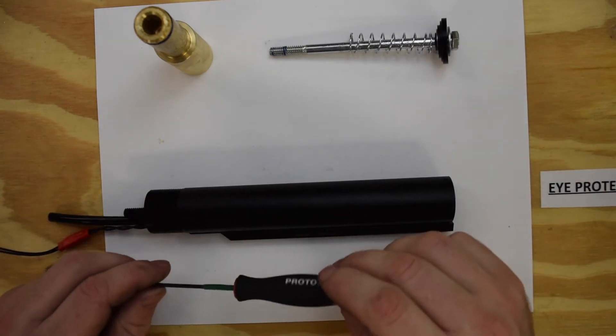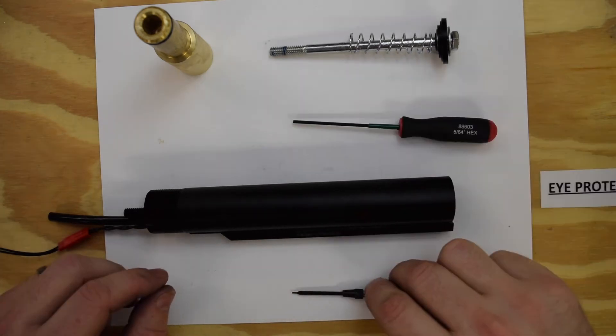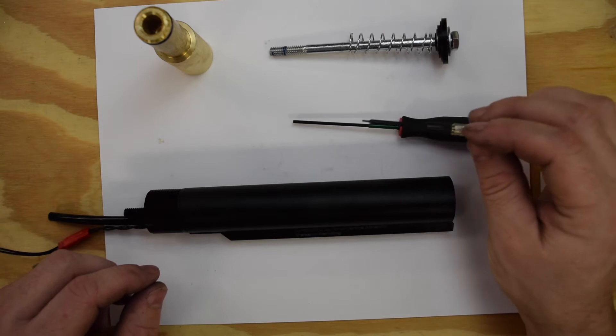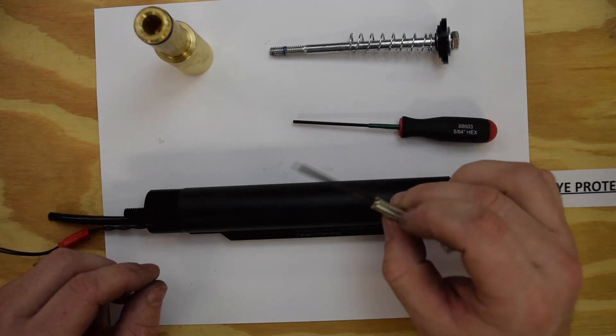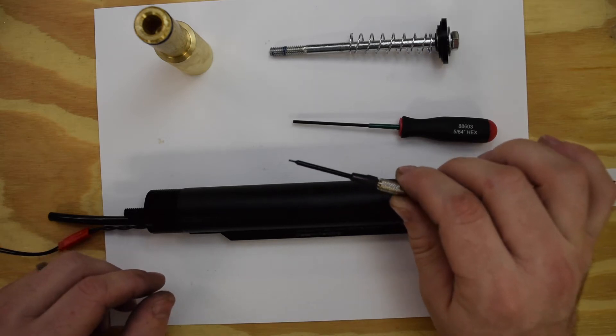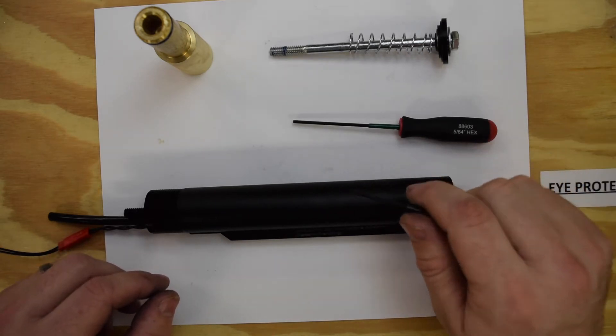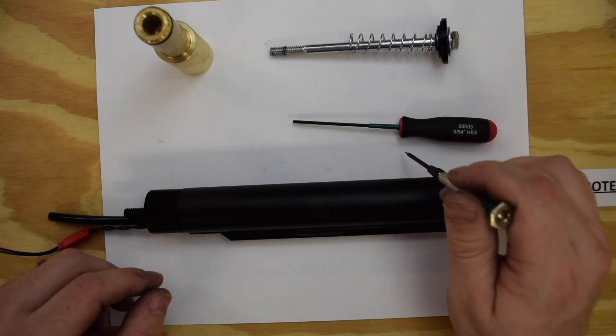If you are going to do it, there are a couple of tools that you will need. You will need a 5/64 allen key and then you will need one that is probably going to be a little more difficult to find, which is a 35 thousandths allen key. This is a very, very small allen key. They can be found, but you might not be able to pick one up at your local hardware store.